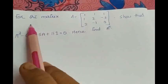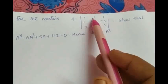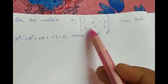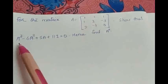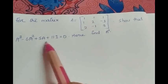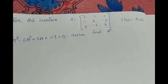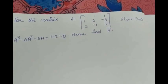Next question. For the matrix A equal to 1, 1, 1, 1, 2, minus 3, 2, minus 1, 3, show that A cube minus 6A square plus 5A plus 11I is equal to 0. Hence, find A inverse.